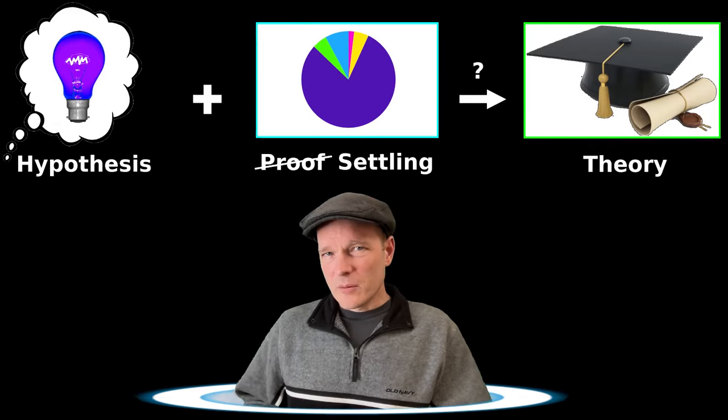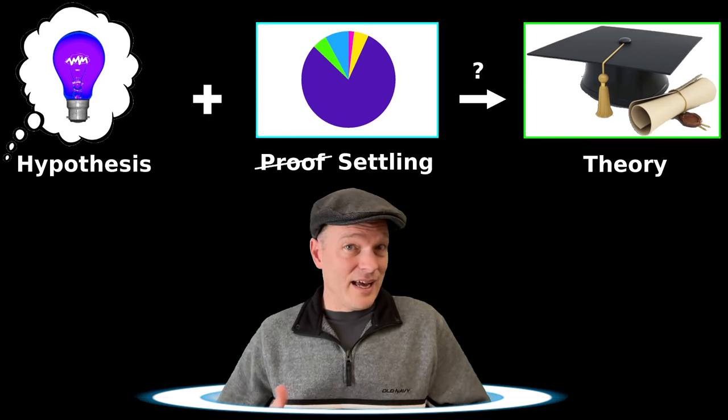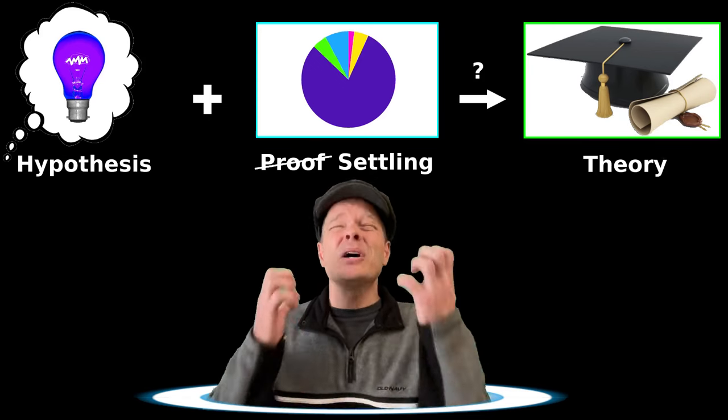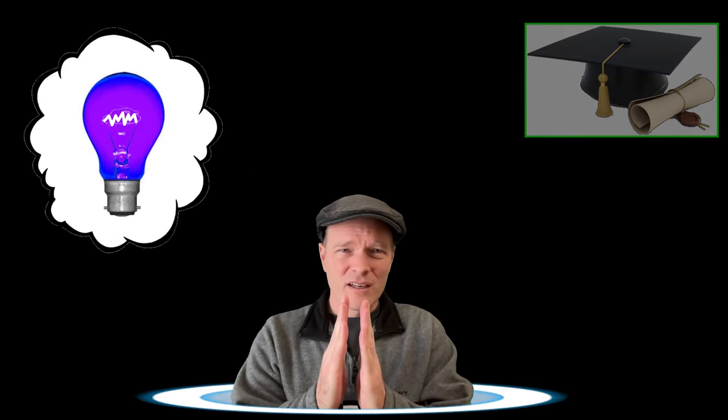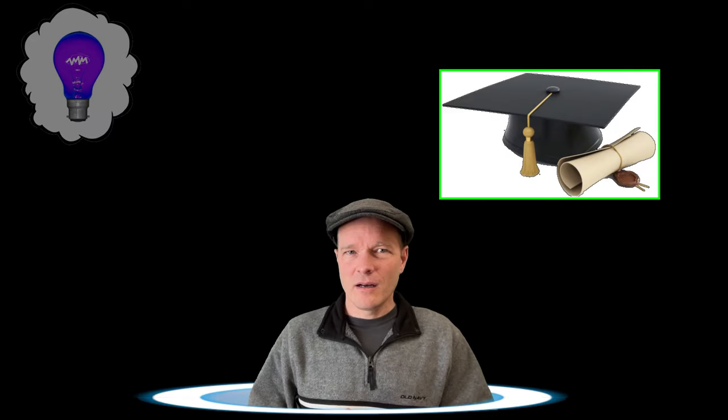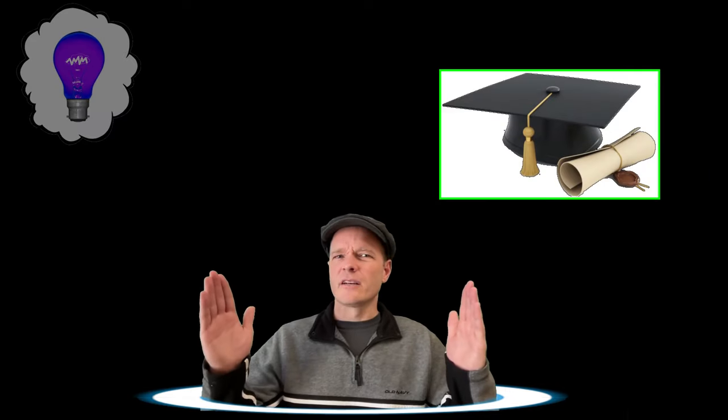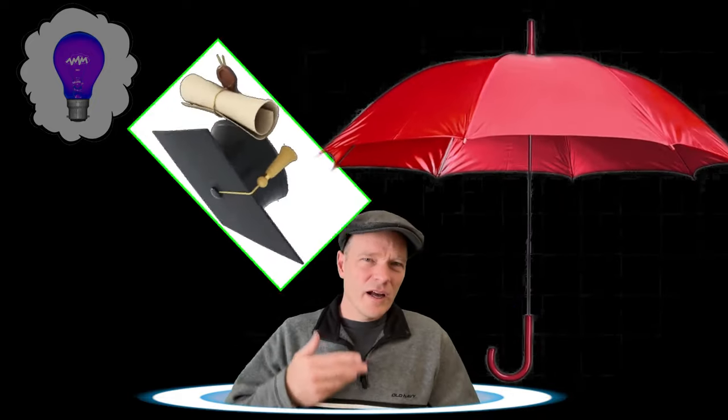So when it becomes clear that a hypothesis has been settled, is that when it turns into a theory? No. That's not how it works at all. You see, a hypothesis is a narrow explanation for something very specific, something that can be directly tested. A theory is a broad explanation for something very general. A theory ties together many different hypotheses. Some of these hypotheses may have been thoroughly settled, but many of them are often still speculative. And that's okay. A theory is not some kind of claim about what is true. It's an attempt to explain a general phenomenon.